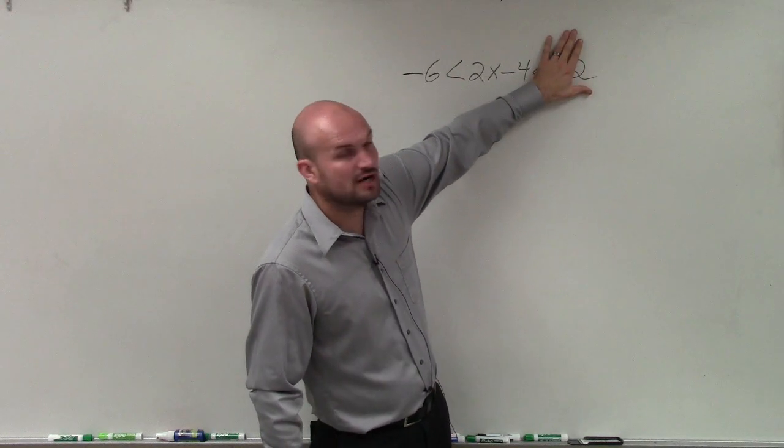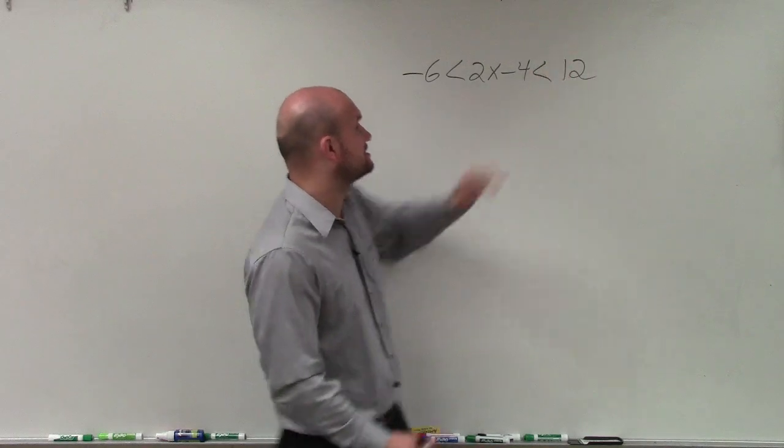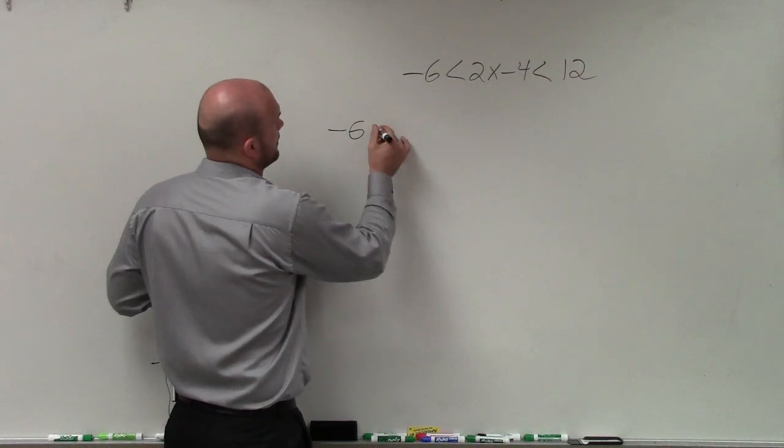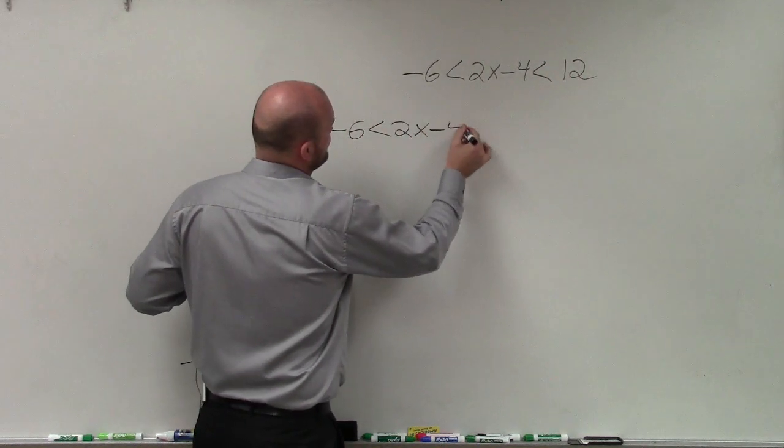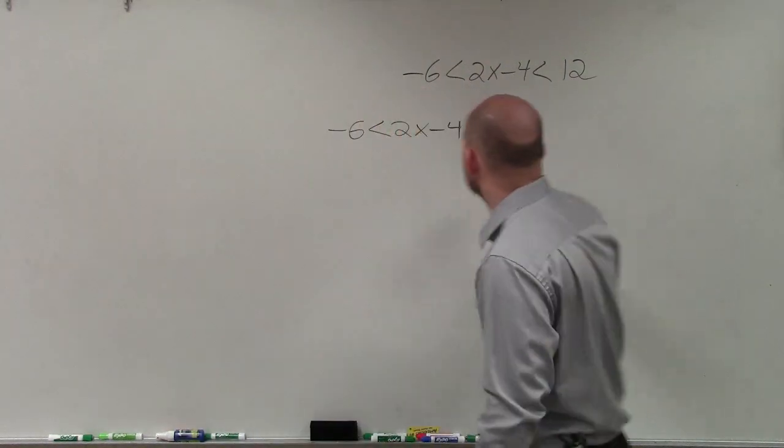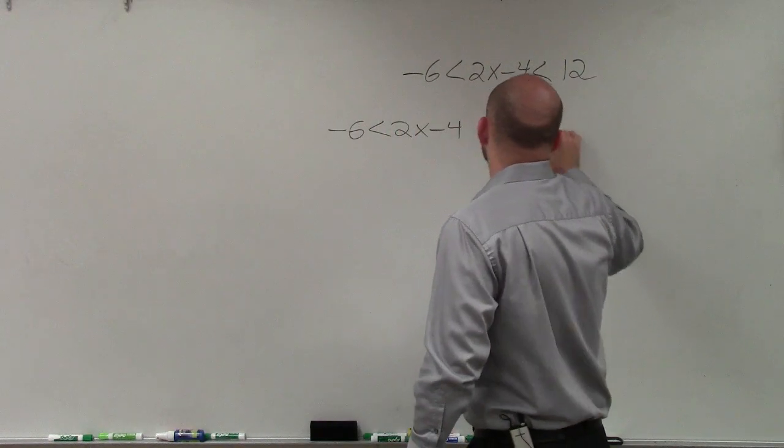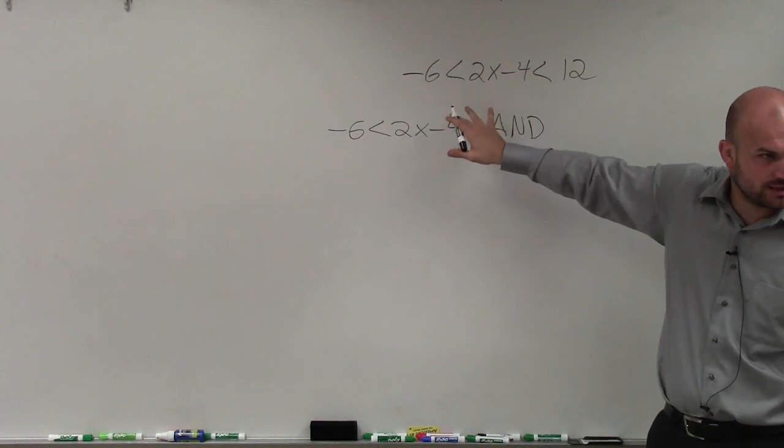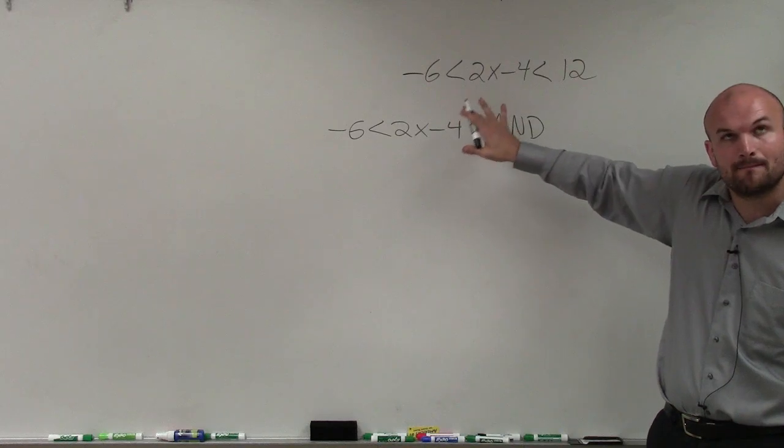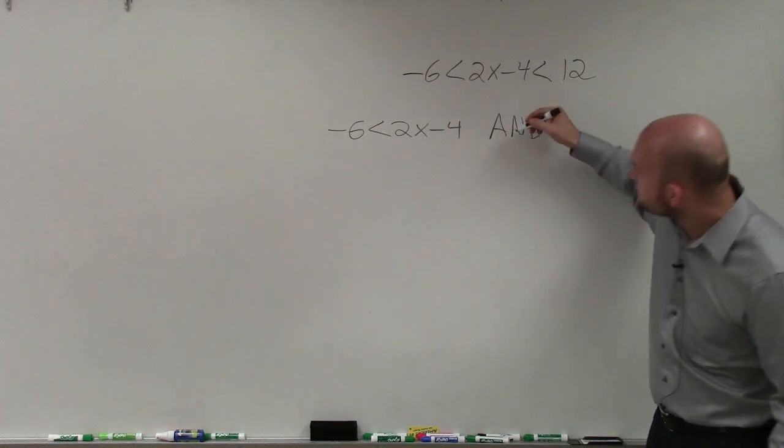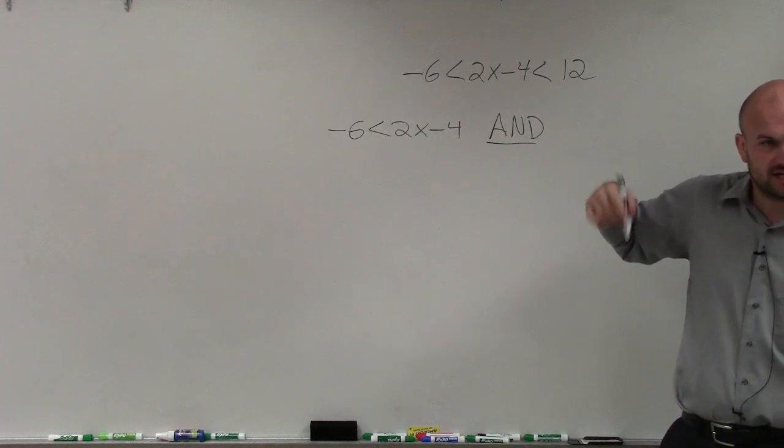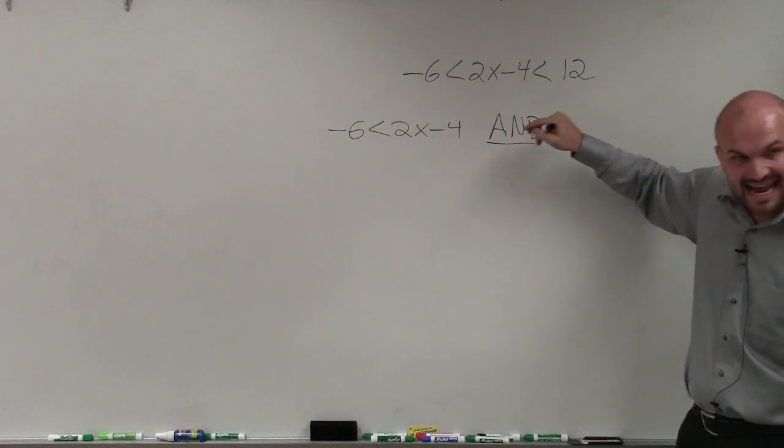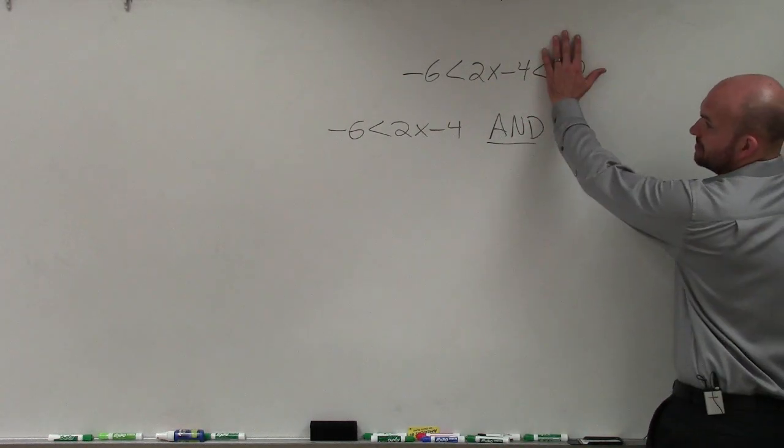So what we basically do is just cover up one end, and we just write negative 6 is less than 2x minus 4. And the reason why I like breaking it up is because I like to use my conjoining statement. This is what we call an and compound inequality. And it's very important for you guys to see this and. Because when we talk about graphing, and is going to become very important.